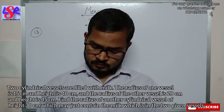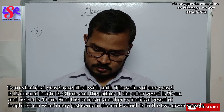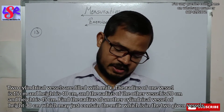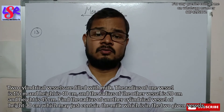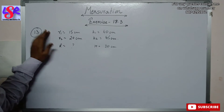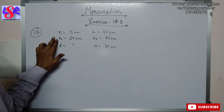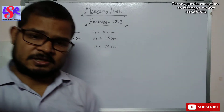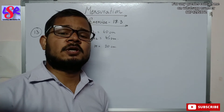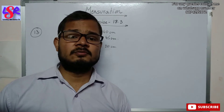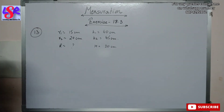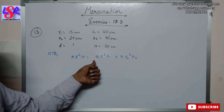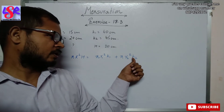In question 13, two cylindrical vessels are filled with milk. Vessel 1 has radius r1 = 15 cm and height h1 = 40 cm. Vessel 2 has radius r2 = 20 cm and height h2 = 45 cm. We need to find the radius of a third cylinder of height 30 cm that exactly contains the combined milk. So: πR²H = πr1²h1 + πr2²h2.